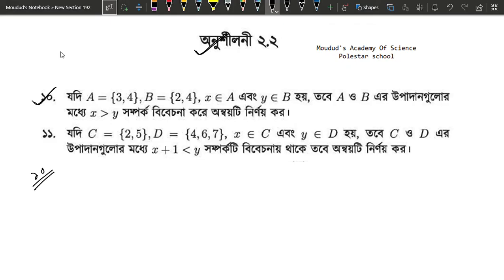What is this? A equals {3, 4}. B equals {2, 4}.